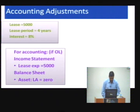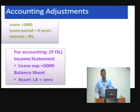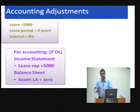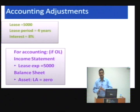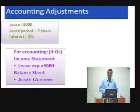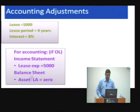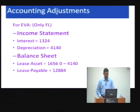Let us pick up one more — the lease. Accounting gives you the freedom of treating a lease as an operating lease or a finance lease. In accounting, if treated as an operating lease, there is an expense but no asset and no liability. EVA, however, says no operating lease — treat all leases as finance leases. For example, with a lease of 5,000 over four years at 8% interest, accounting shows expense of 5,000 with no asset and no liability.